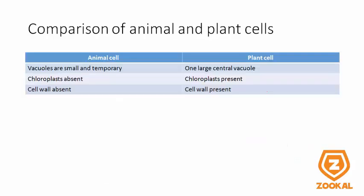Here's a quick comparison of animal and plant cells. In animal cells, the vacuoles are small and temporary, while the plant cell has one large central vacuole. Chloroplasts are absent in animal cells while they are present in some plant cells. In animal cells, the cell wall is absent, and in plant cells, the cell wall is present.